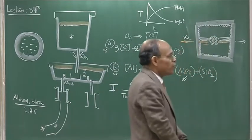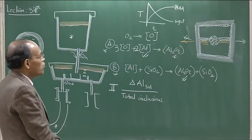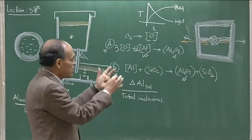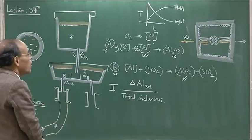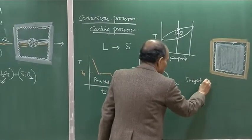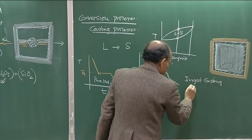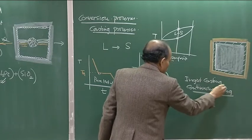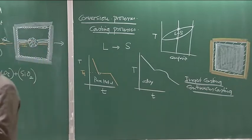With this background as revision, we will now discuss the two casting processes: ingot casting and continuous casting. Continuous casting is the dominant technology in the steel industry today due to significant technological advantages, which will be outlined after discussing ingot casting.